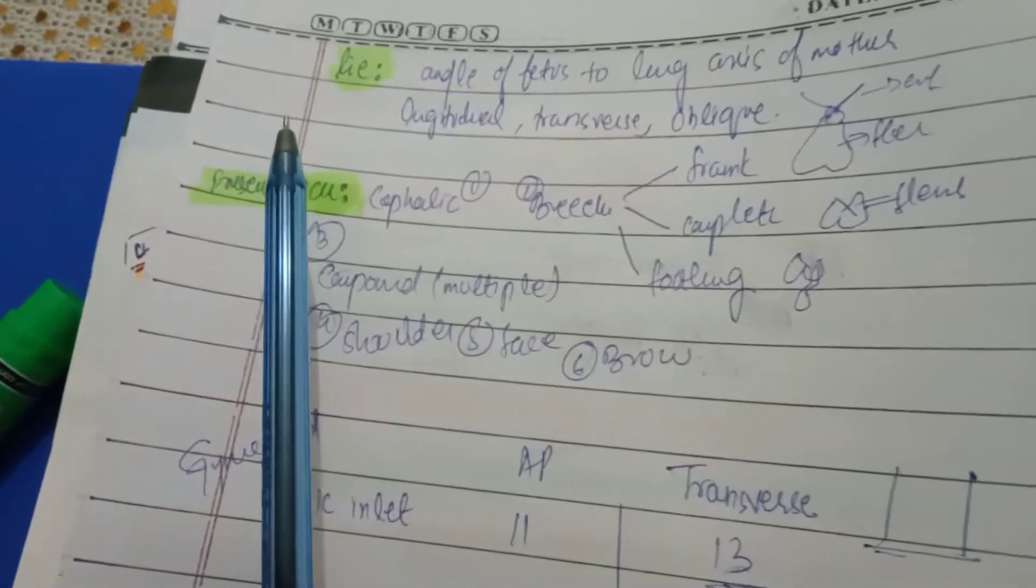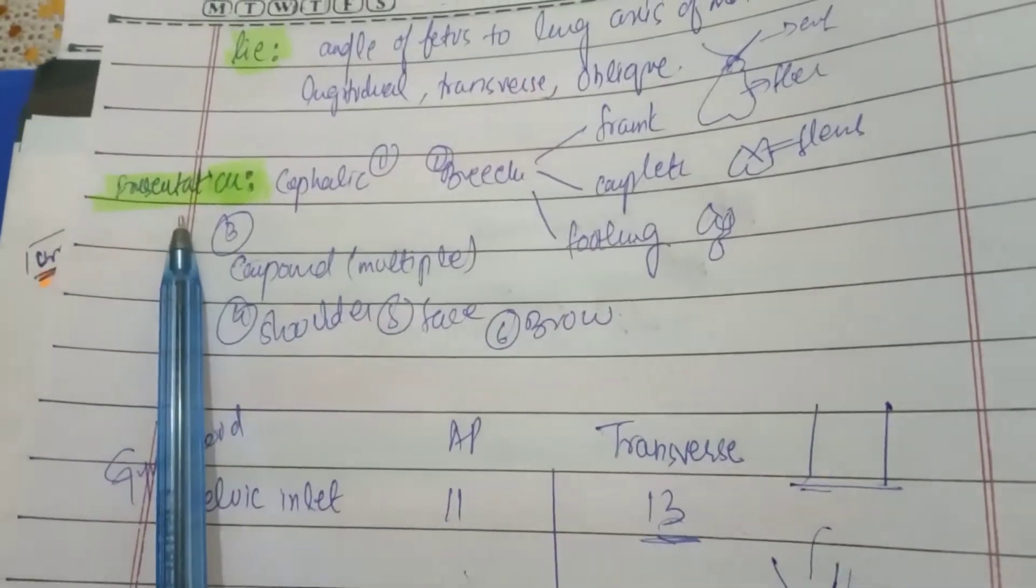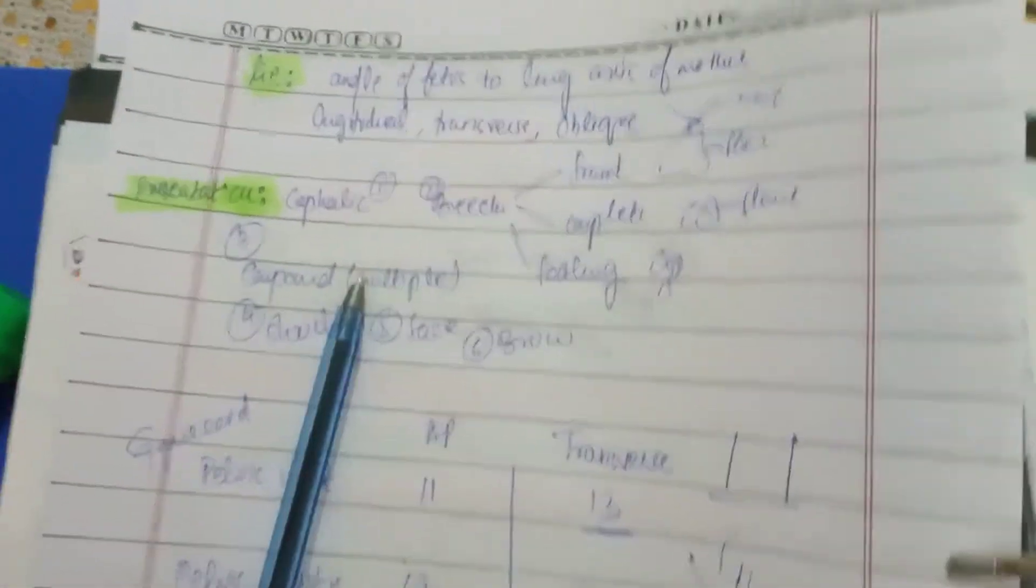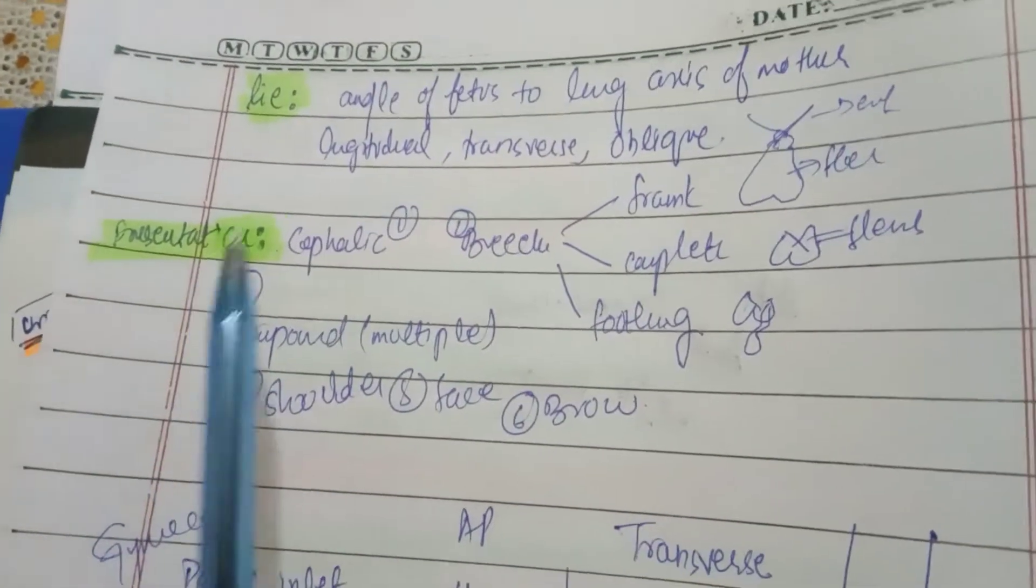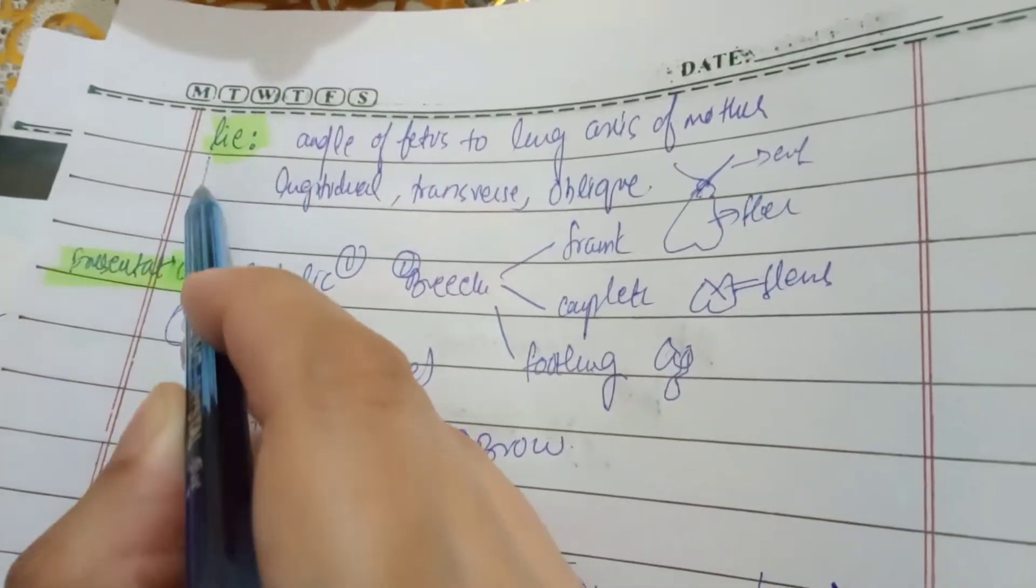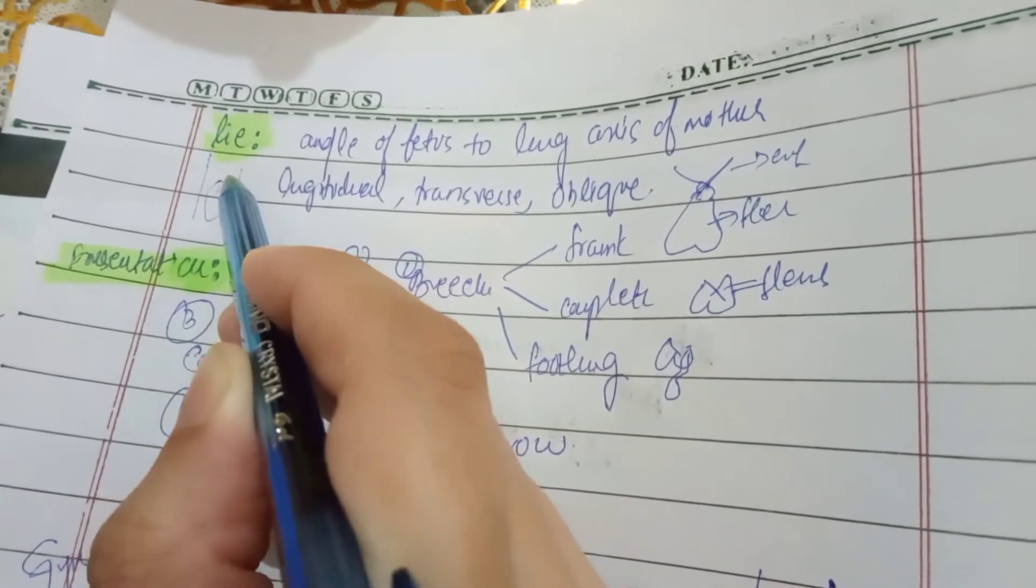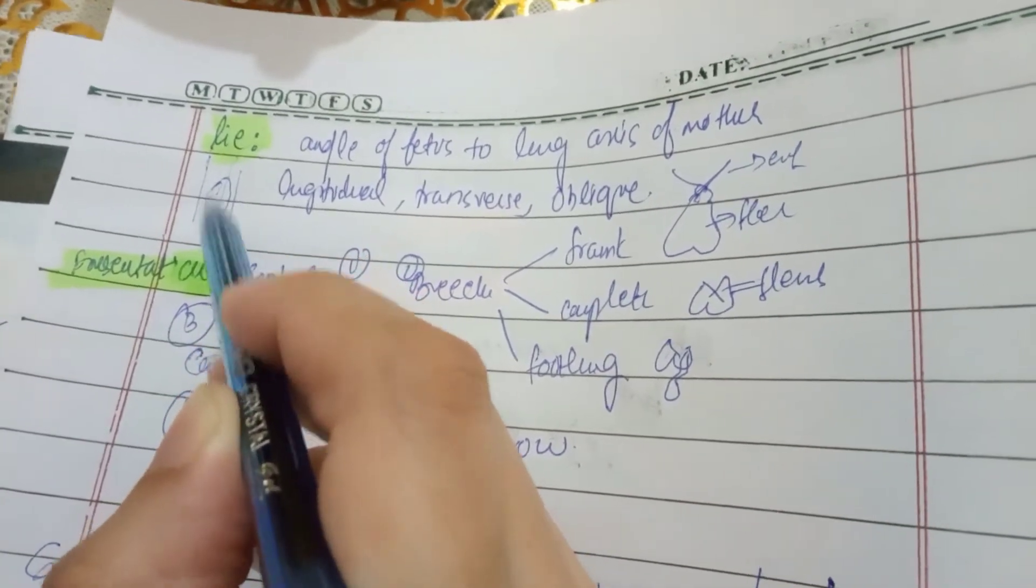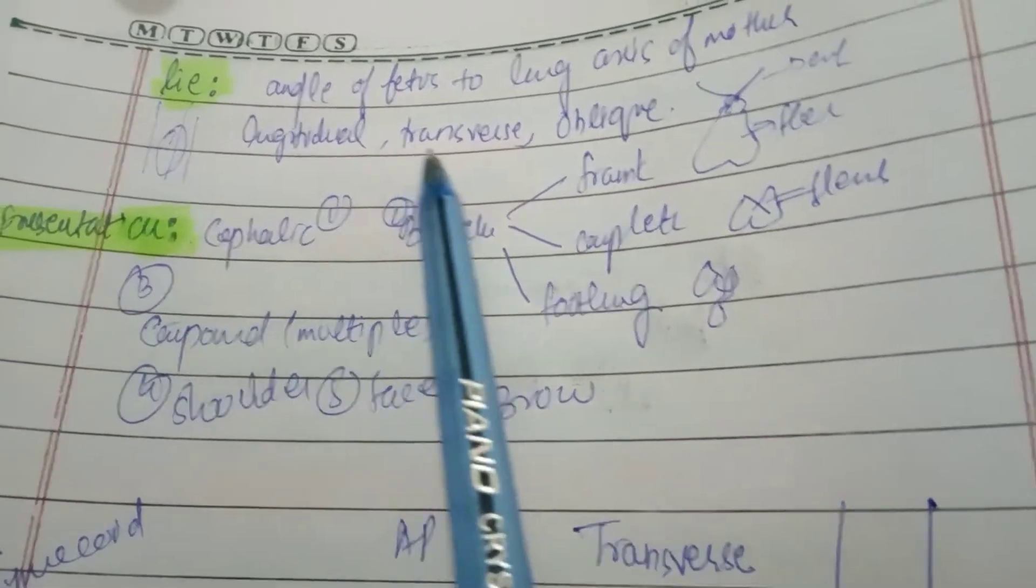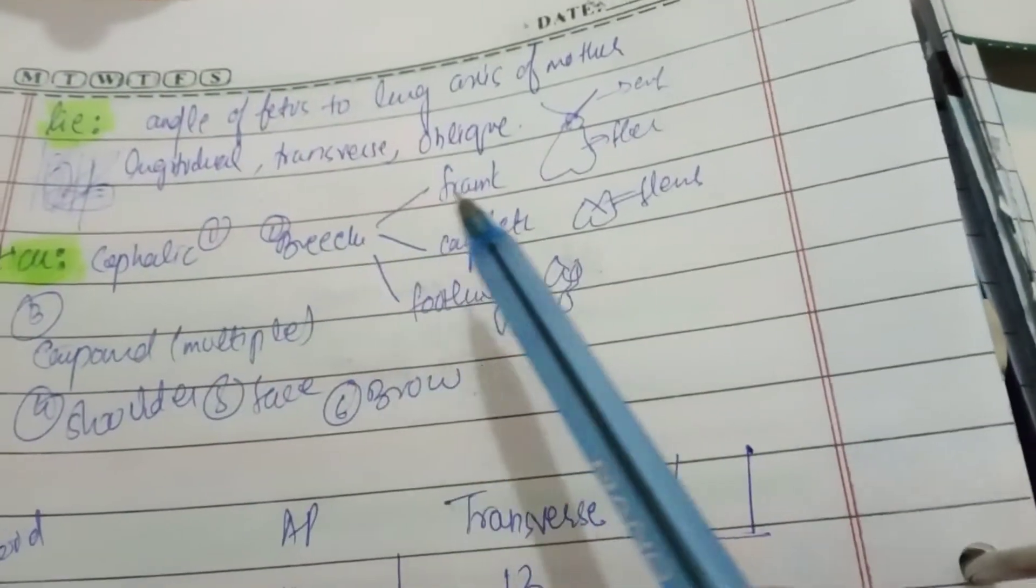What is lie? It is the angle of the fetus to the long axis of mother. This is the mom's body. And this fetus is the fetus. If it is lying like this, this is longitudinal. And transverse: if the mother's body is like this or the baby is lying like this, this is transverse. And oblique is under it. This is the lie of the baby.